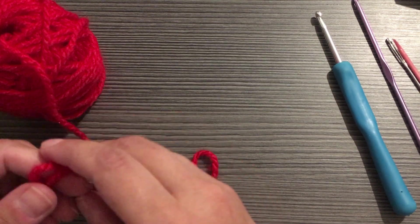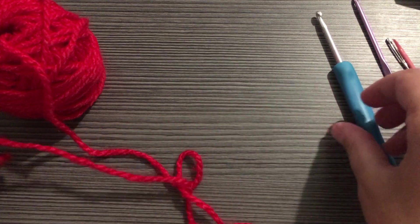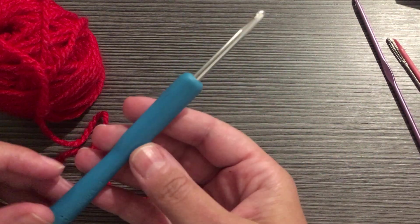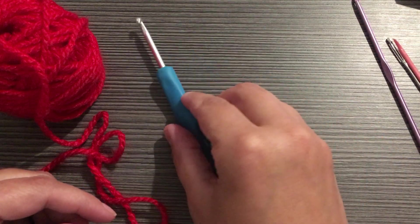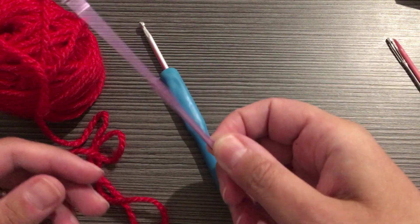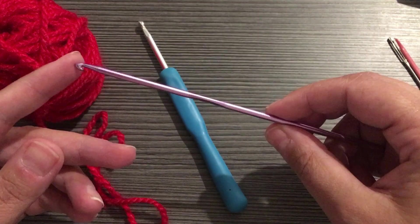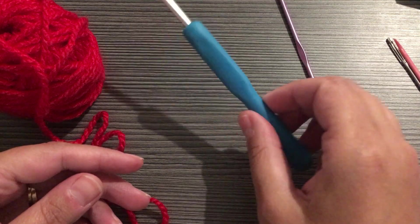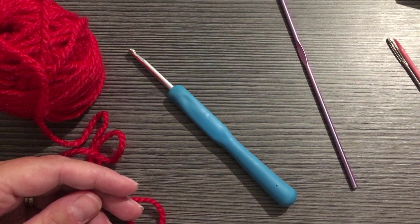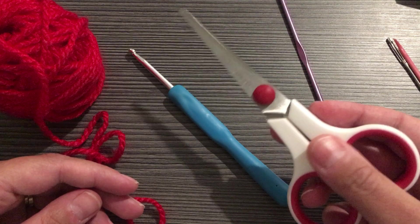Next you'll need a hook. Your yarn label should recommend a hook size for the yarn that you have. Remember you don't have to spend a lot on hooks. These aluminum hooks work out perfectly. I crocheted for years with aluminum hooks until recently.